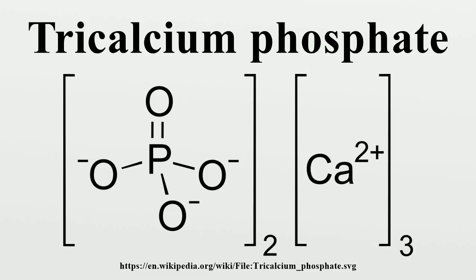Nomenclature: Calcium phosphate refers to minerals containing calcium ions together with orthophosphates, metaphosphates or pyrophosphates, and occasionally hydrogen or hydroxide ions. Especially, the common mineral apatite has the formula Ca5(PO4)3X.